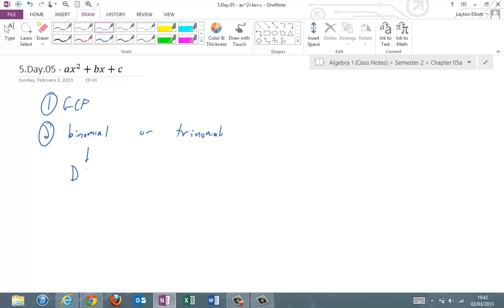If it's a binomial, we're going to look for a difference of two squares. If it's a trinomial, now we're going to look to see if we can factor it as two binomials. This is what we've been spending the last few days on, and now we're going to expand this a little bit. Our efforts today are focused on this, which is called ax² + bx + c, where we now have a leading coefficient for the x² term.